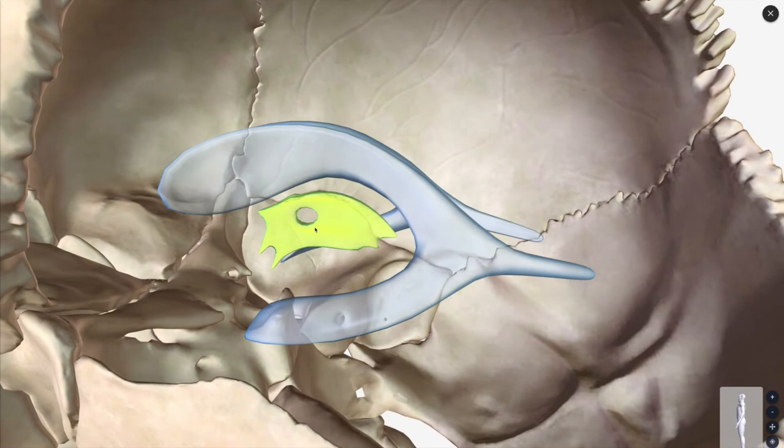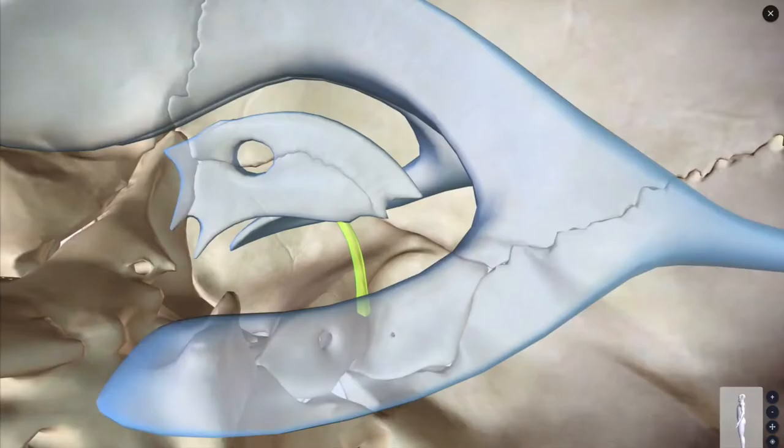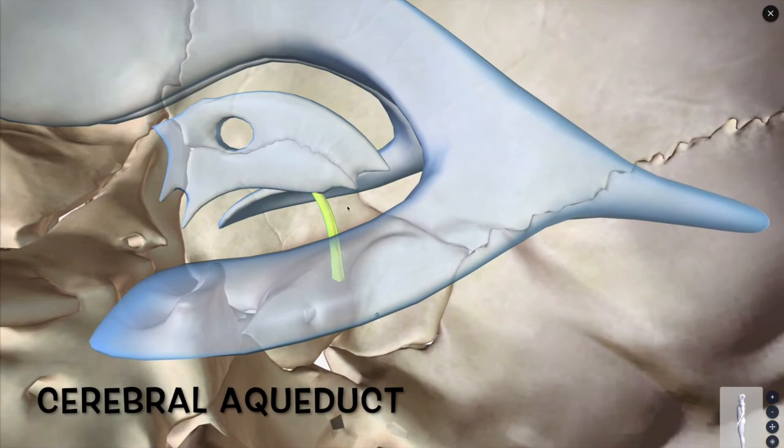After the third ventricle, what does it go through then? That's where it's going to go through your cerebral aqueduct. Third ventricle, cerebral aqueduct.